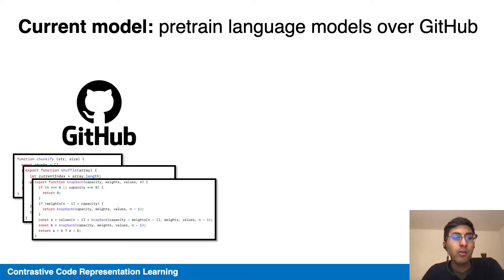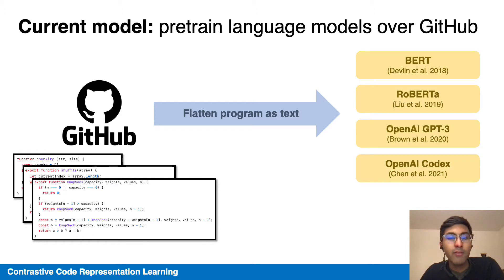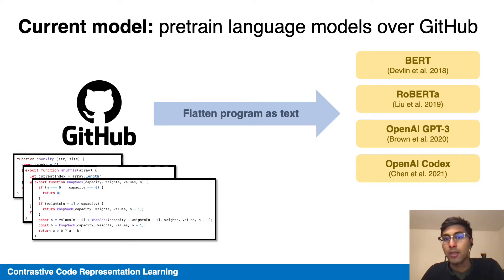Current best models often pre-train on large amounts of GitHub programs. For example, language models flatten the program and treat it as a sequence of textual tokens, then leverage natural language processing models like BERT and RoBERTa to perform self-supervised learning. BERT and RoBERTa use a masked language prediction objective that reconstructs the token based off of its surrounding context as a proxy that lets it learn some meaningful representation.